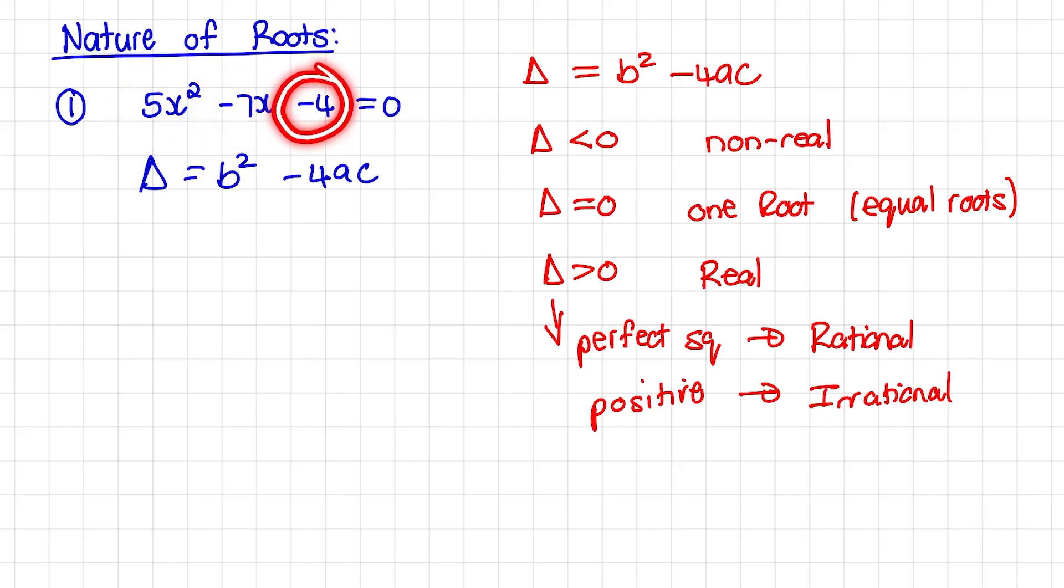And c is the constant value. So b squared would be negative 7 squared minus 4 times 5 times negative 4. That equals 129. So the discriminant is bigger than 0.